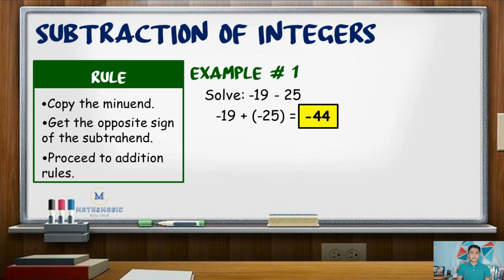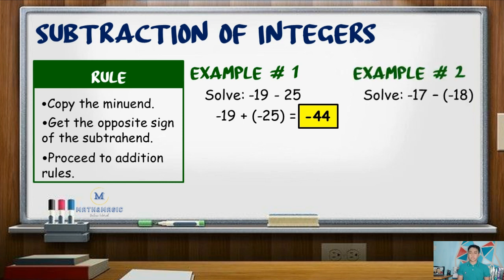For the second example in subtraction of integers: negative 17 minus negative 18. We copy the minuend, negative 17, and change the sign of the subtrahend: negative 18 turns into positive 18.